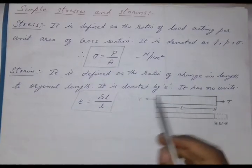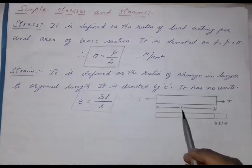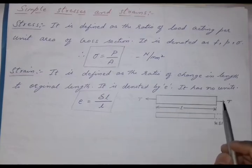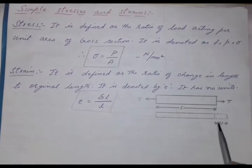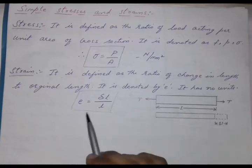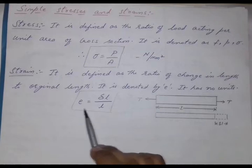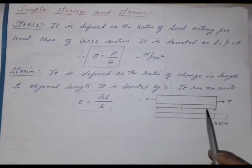Strain can be easily understood by this following diagram. I am considering a rod of length L on which T load is acting. After applying a load, the rod tends to increase in this direction. So the increase in this length is taken as delta L. So what is strain? Strain is defined as the ratio of change in length by original length. Change in length is this and original length is the actual length.